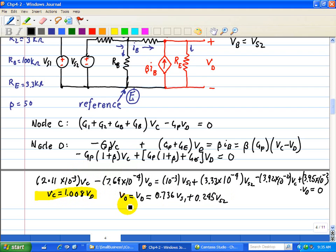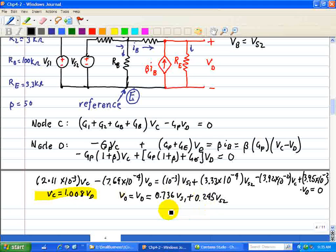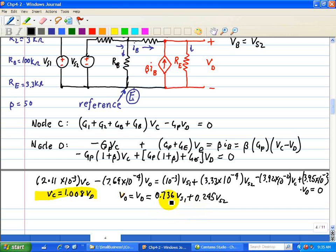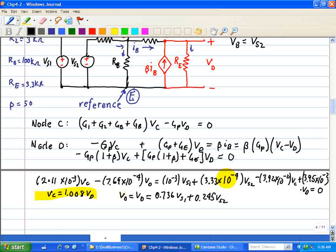And this reminds us that this equation is linear since we don't have any non-linear terms. We just see scalar multiples: 0.736 VS1 and 0.245 VS2. These are the coefficients associated with VS1 and VS2. And we note that VO is a linear combination of VS1 and VS2, which implies this is a linear circuit.